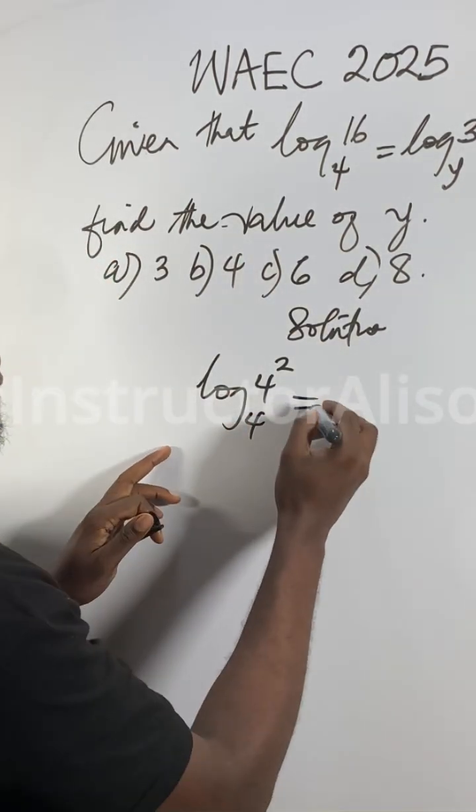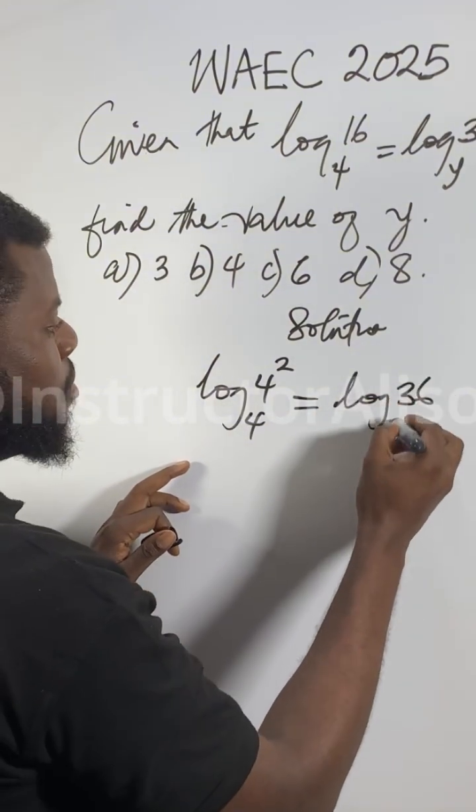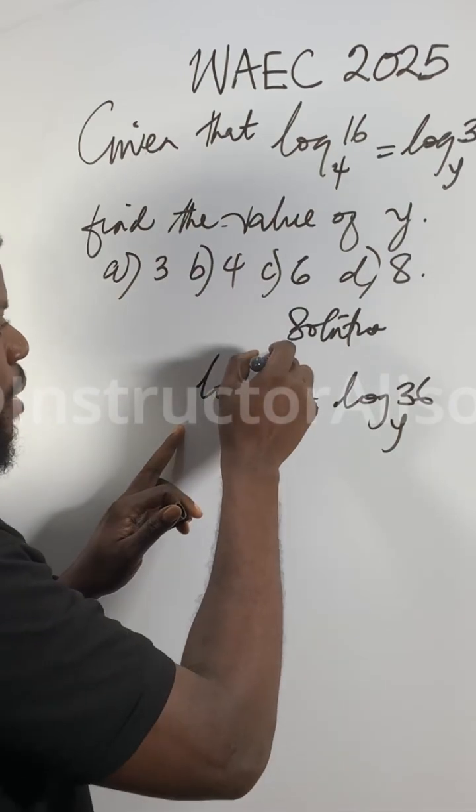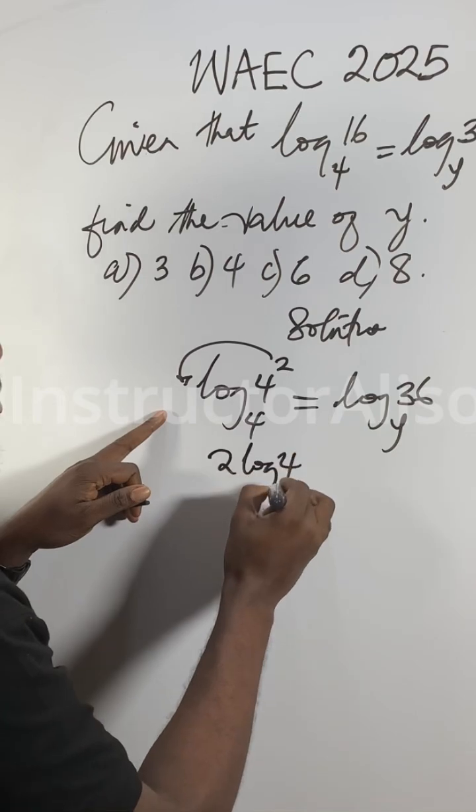Now why do I write it like that? We're going to leave it like that. We have log 36 base Y. Just leave it the way it is. According to power law, this 2 up here will come in front of this log. So I can get 2 log 4 base 4.